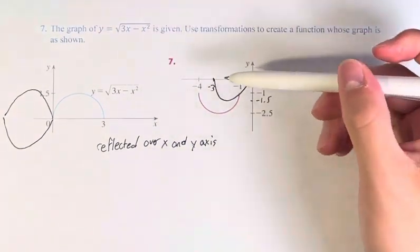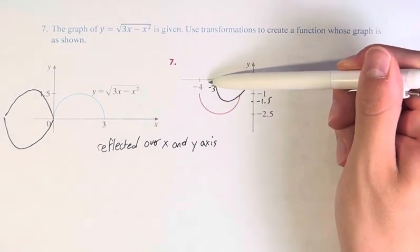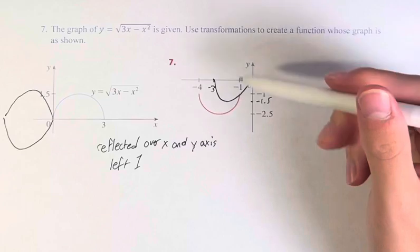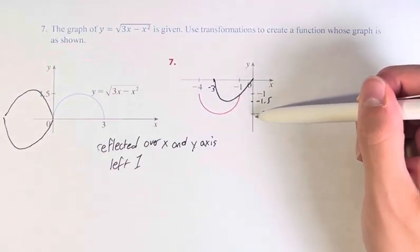It has been moved to the left 1. Right? So going from 0 to negative 1 and negative 3 to negative 4. And down 1, so from 0 to negative 1 and from negative 1.5 to negative 2.5.